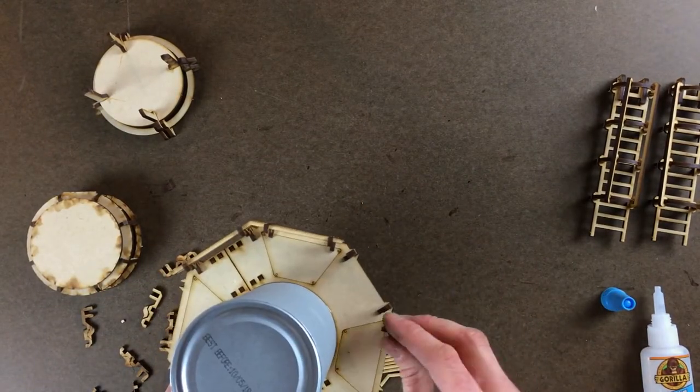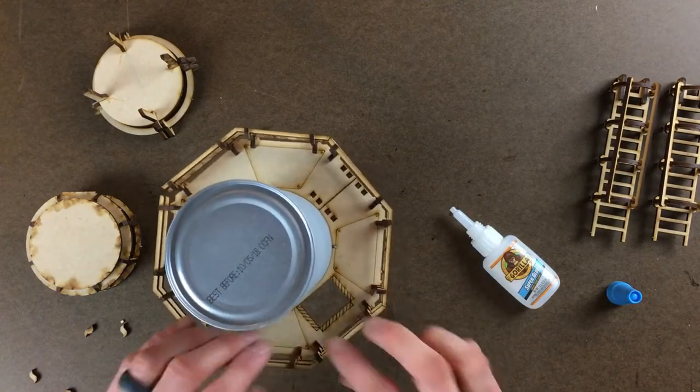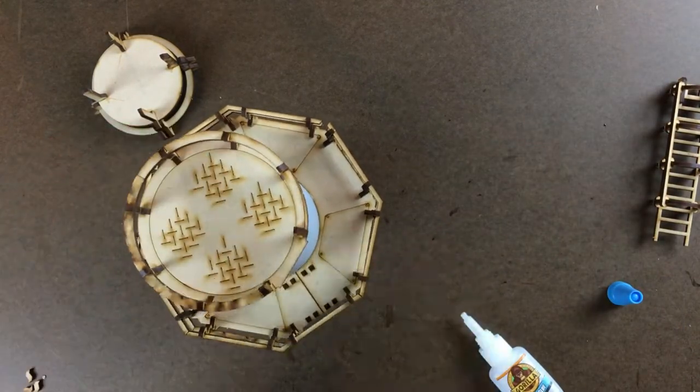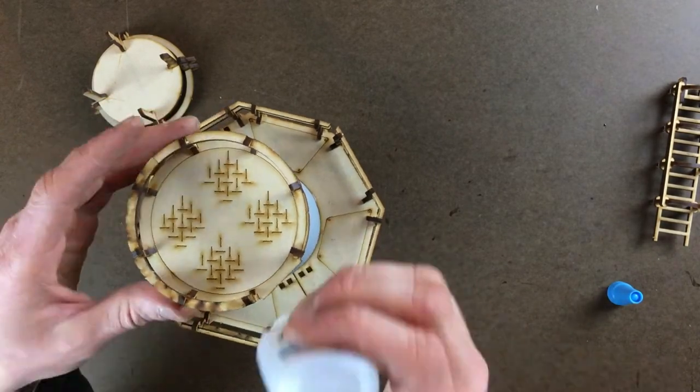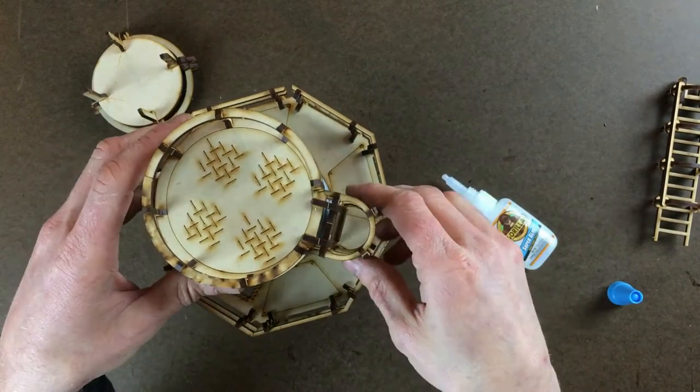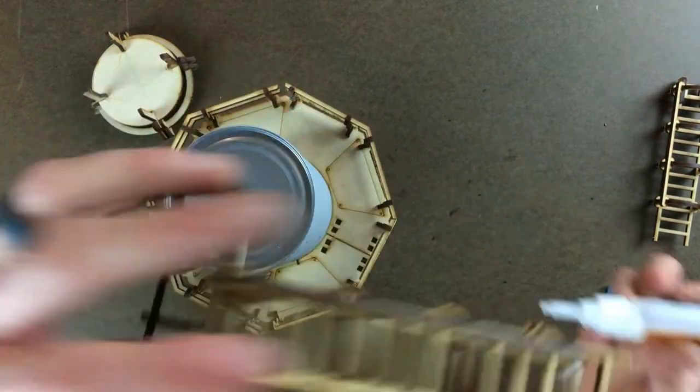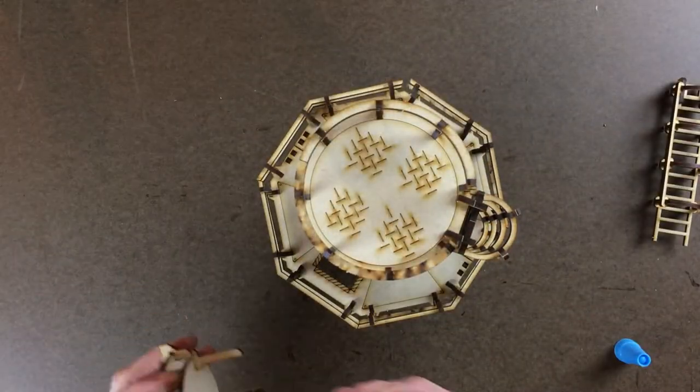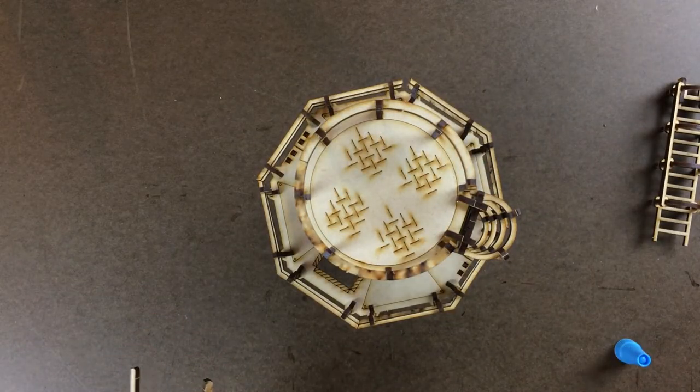My trick there is to line up the corner of the railing with the corner of the platform. All right, so here's the ladder with those deeper clips that we talked about earlier, so that fits on the top. And then the ladder with the more shallow clips will fit on the bottom platform.